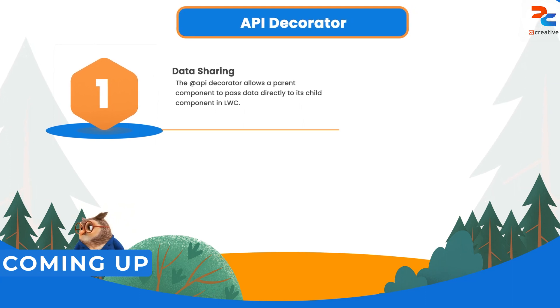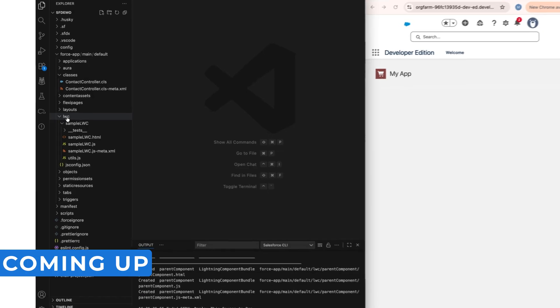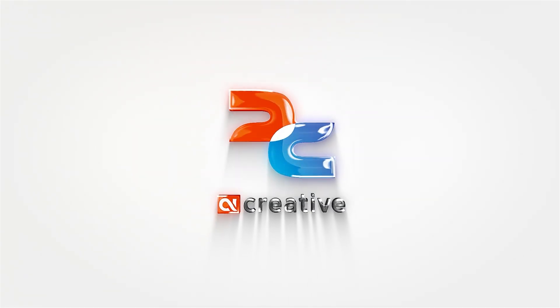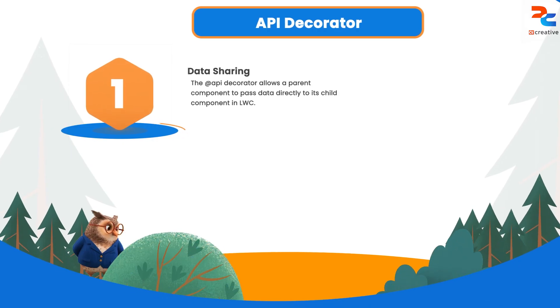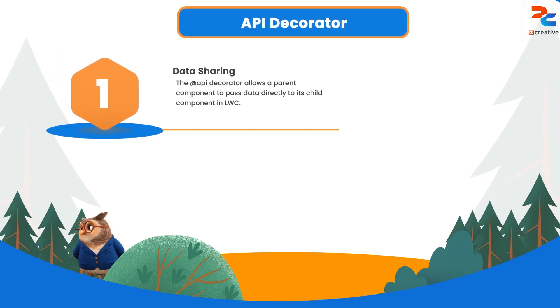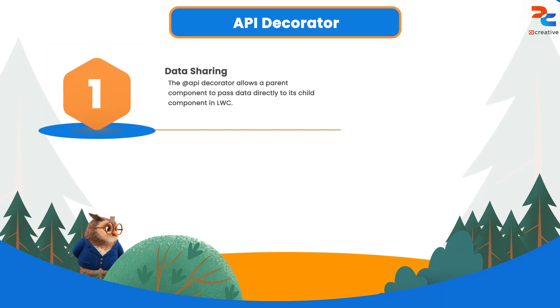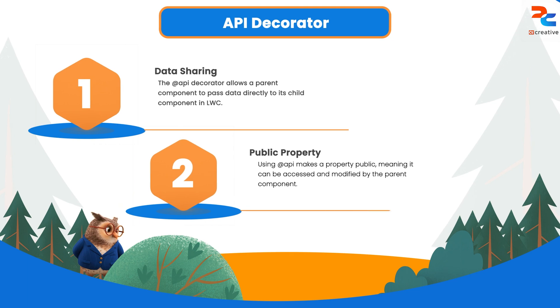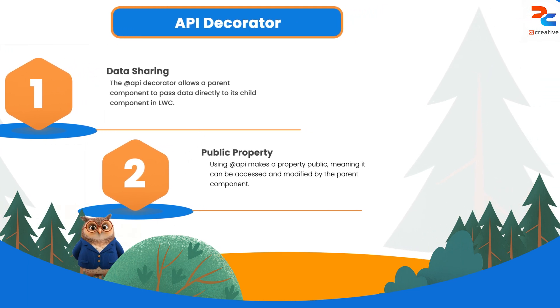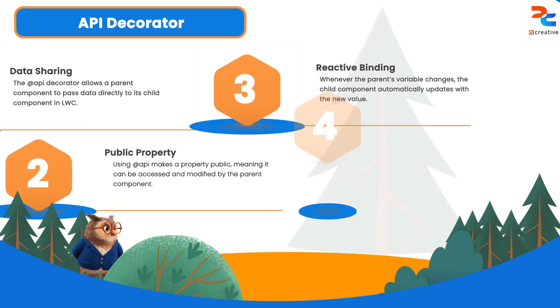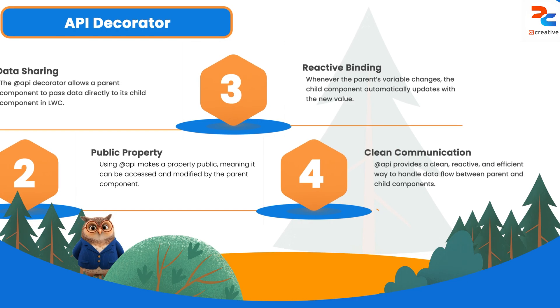In this video we are going to learn how a parent component can share data with its child using the API decorator — the cleanest and most reactive way to communicate between components in LWC. When we want to send data from a parent to a child component, we use the API decorator in the child. The API decorator makes a property public, meaning it's visible and assignable from the parent component. This allows reactive data binding — whenever the parent variable changes, the child automatically updates.